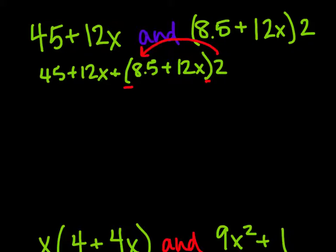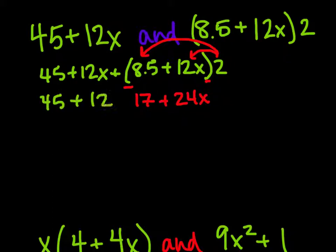We're going to multiply 2 times 8.5, so we'll get 17. And we'll multiply 2 times 12x, and we'll get 24x. So we still have 45 + 12x.